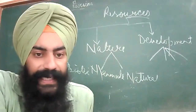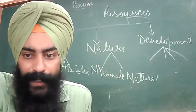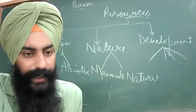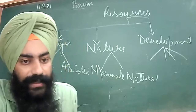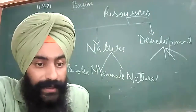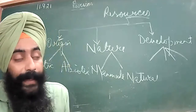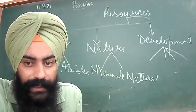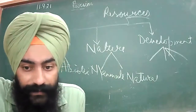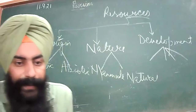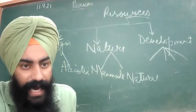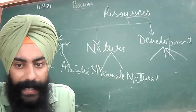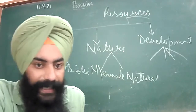A human will be a liability when a person is unable to contribute to the economy. This includes illiterate persons and those who are not mentally stable — they are liabilities because they are not producing in the economy. That kind of population reduces the per capita income and average income of India.